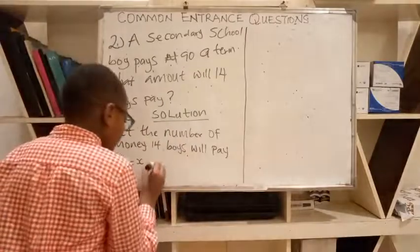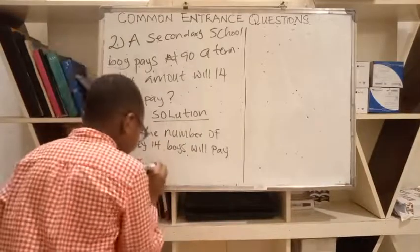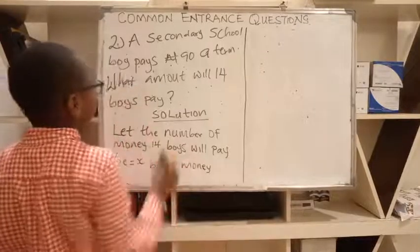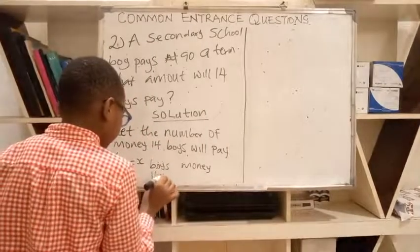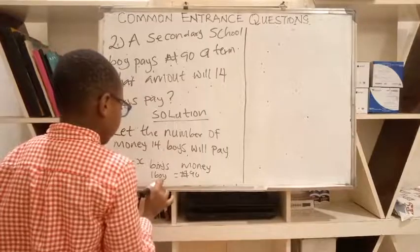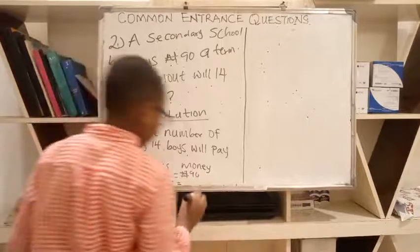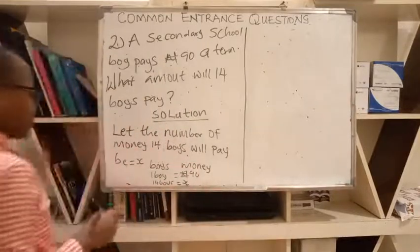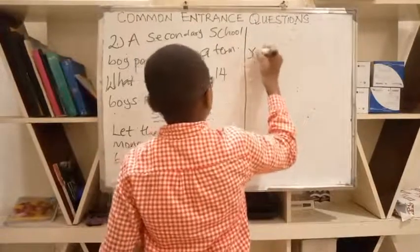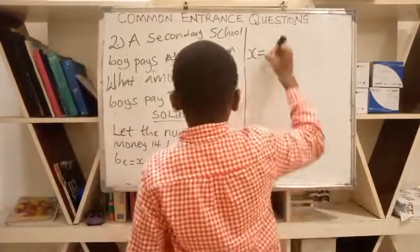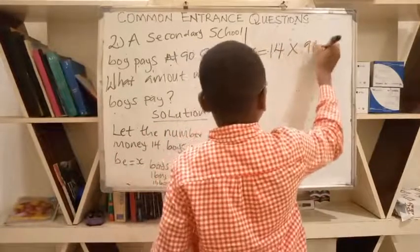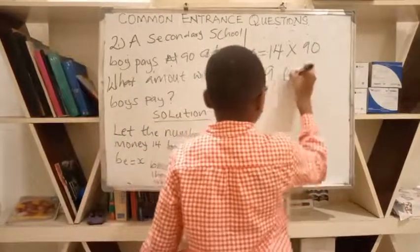We do boys and money. One boy equals 19 naira. So 14 boys equal to X naira. So X equals 14 times 90. Let the calculations begin.